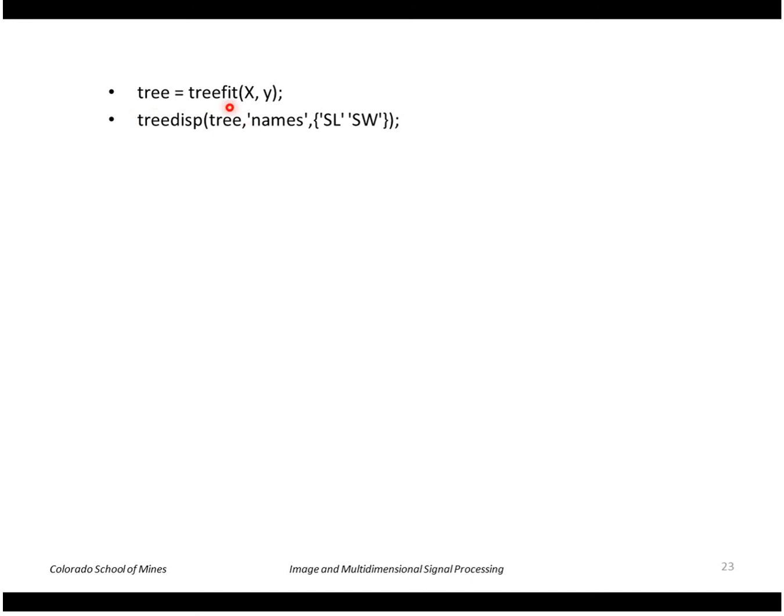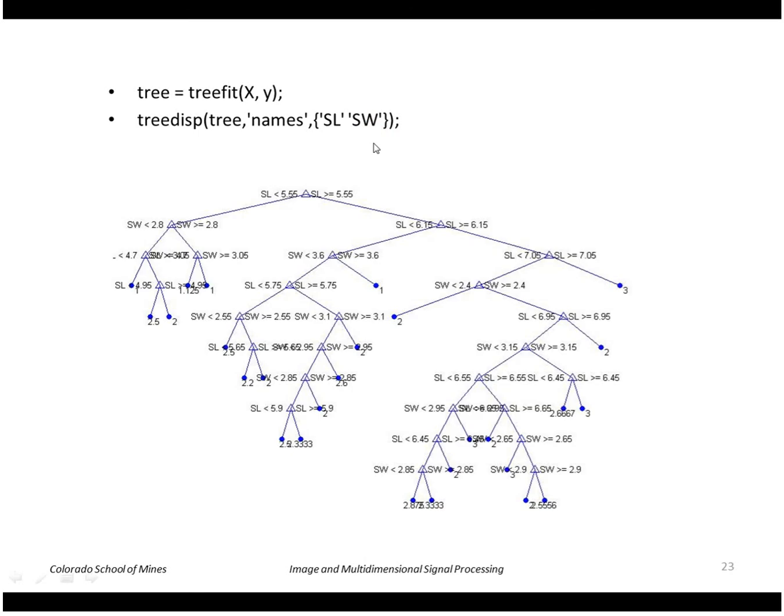And we can display that using this function called tree disp. We pass in the tree that we found from tree fit and we can optionally give names for the dimensions of the vectors. In this case, it's the sepal length and the sepal width. So if I do that, I get this tree displayed for that example. So this is a decision tree.